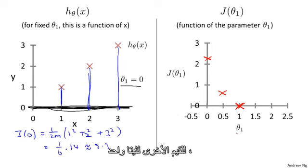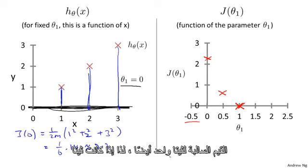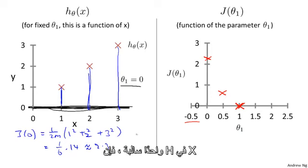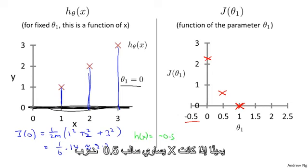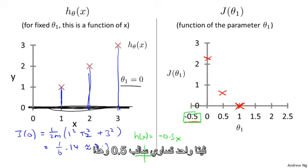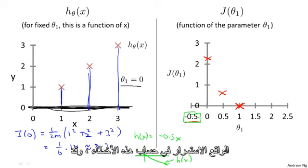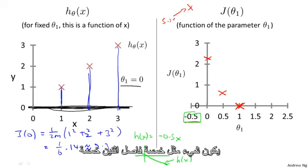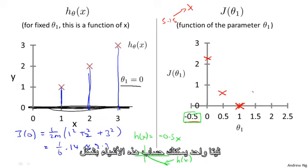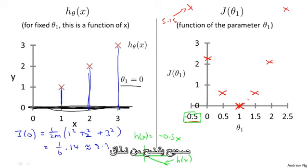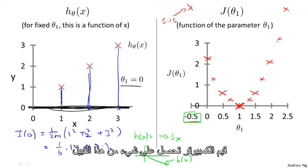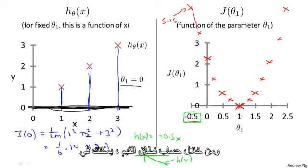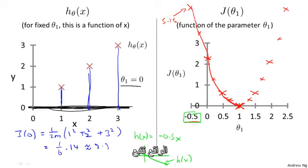Of course, we can keep doing this for other values of theta one. It turns out you can have negative values of theta one as well. If theta one is negative, say minus 0.5, then h of x would equal minus 0.5 times x, corresponding to a hypothesis with a slope of negative 0.5. You can keep computing these errors — for minus 0.5 it turns out to be a really high error, something like 5.25. For different values of theta one you can compute these things, and by computing the range of values, you can trace out what the function J of theta one looks like.